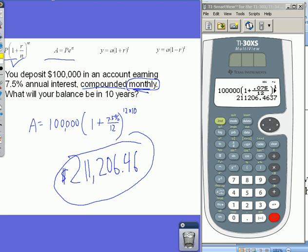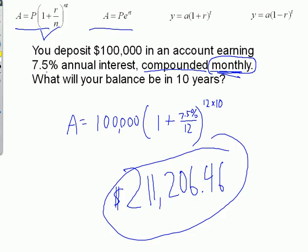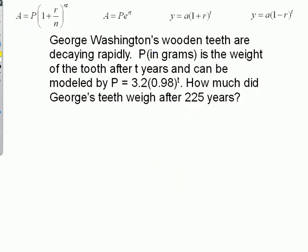Let's go on to the next to the last one. George Washington's wooden teeth are decaying rapidly. He's been dead for many years. P in grams is the weight of the tooth after t years and can be modeled by this equation. If they give you an equation, you can just forget about these things. If they give you an equation, just use what they have and fill in the variable that they're telling you and calculate it for the one they're asking about. So they're asking how much is it going to weigh, and they're telling us after 225 years, so we're going to put that in for t.